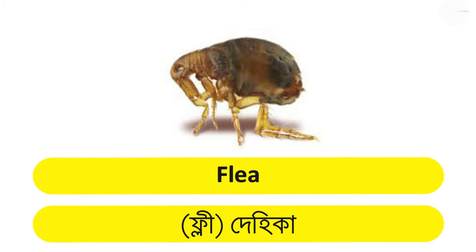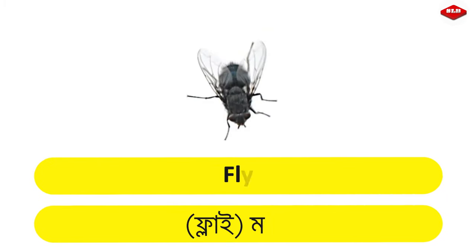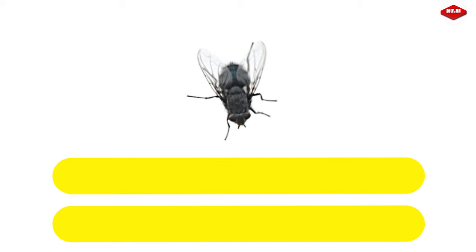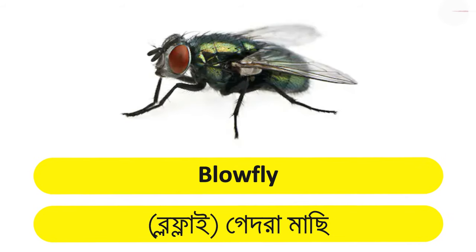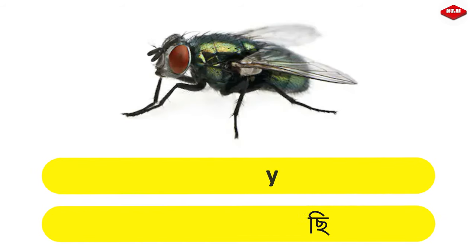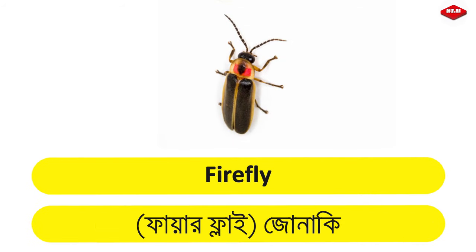Flea – Dehika. Fly – Machi. Blowfly – Gedra Machi. Firefly – Jonaki.